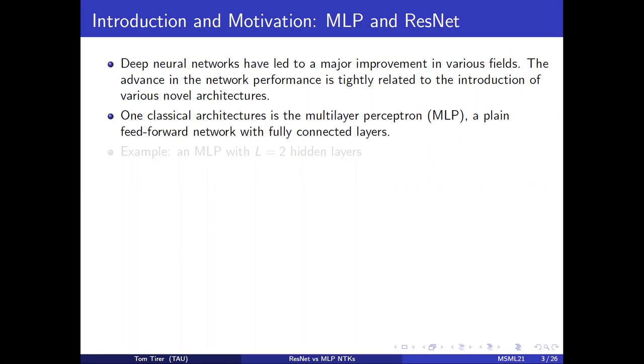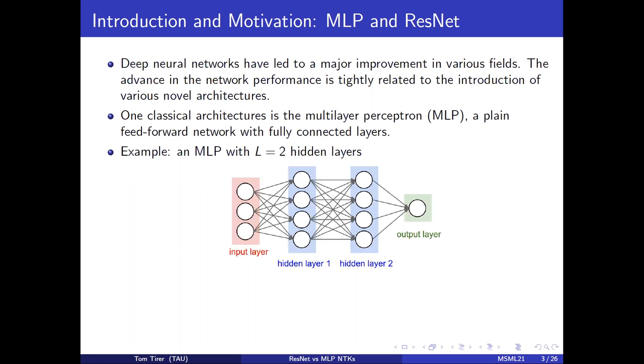One classical architecture is the multilayer perceptron, or MLP, which is a plain feedforward network with fully connected layers. Here you can see, for example, an MLP with two hidden layers.